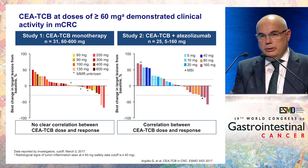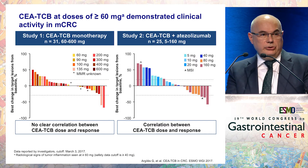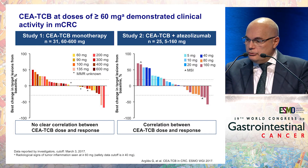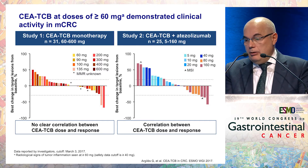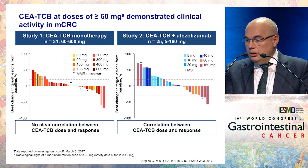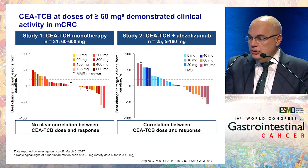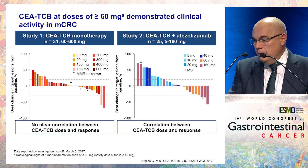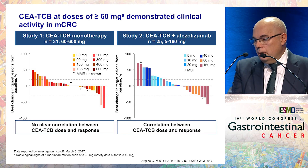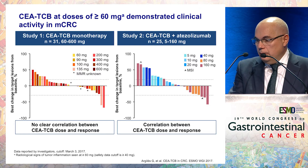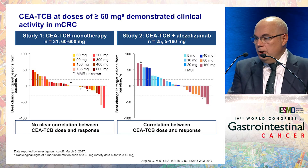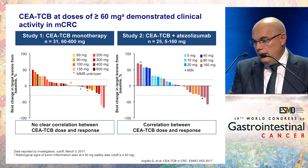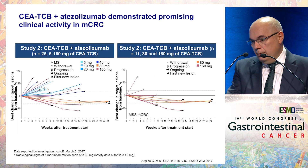On this basis, two clinical studies were launched: one with CEA-TCB as a single agent and another in combination with atezolizumab. Responses were seen in this very refractory colorectal cancer population with CEA-TCB alone, but especially with the combination of CEA-TCB and atezolizumab. There is a slight trend for a correlation between CEA-TCB dose and response, particularly at higher doses of 80 and 160 milligrams.